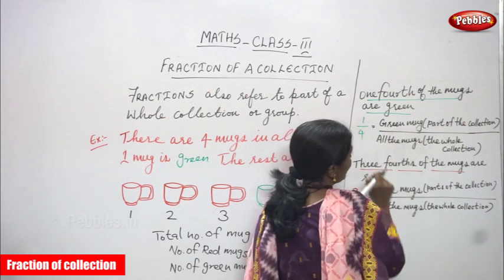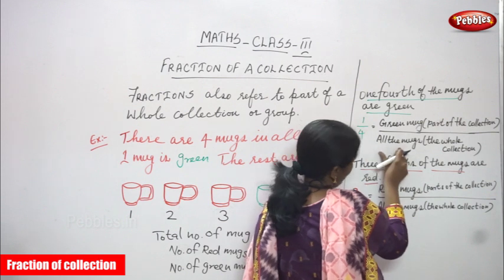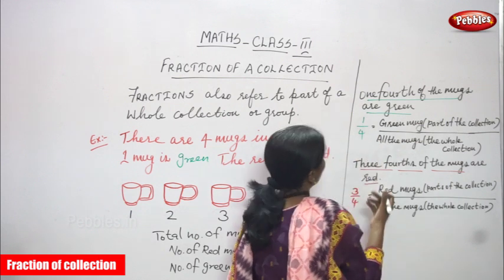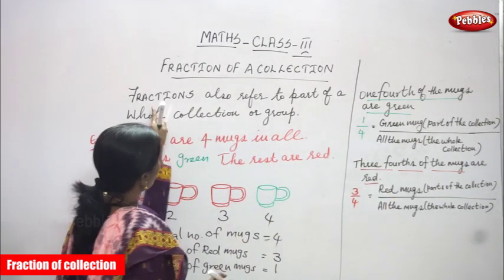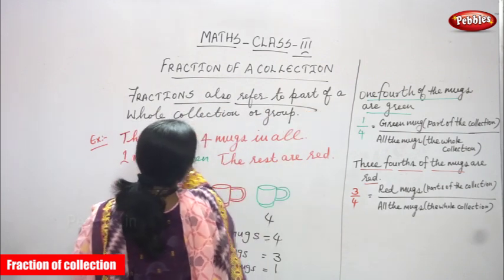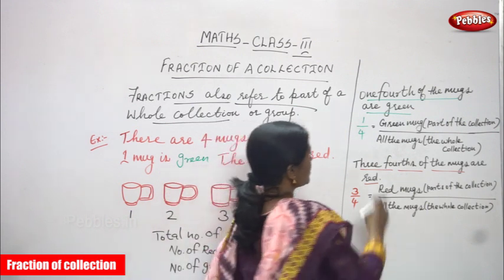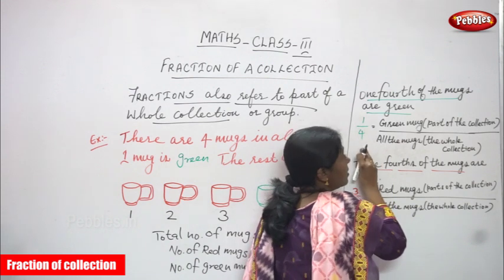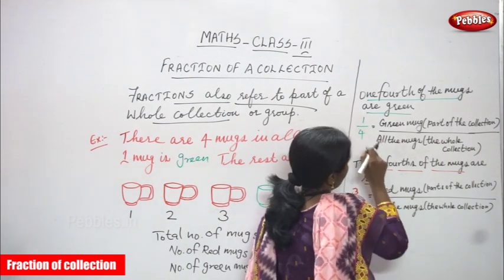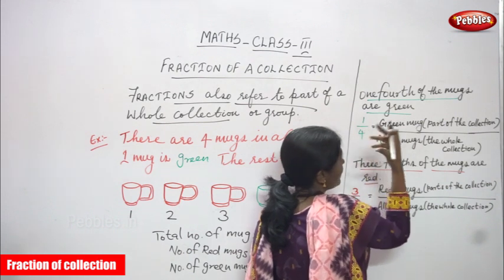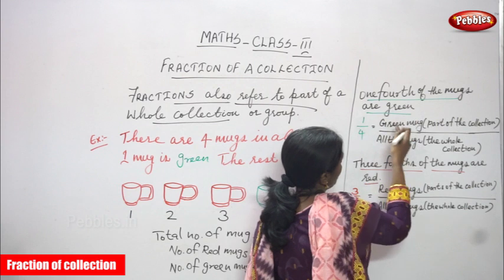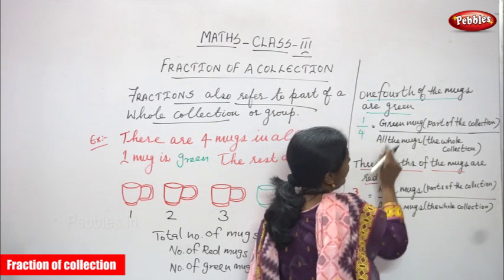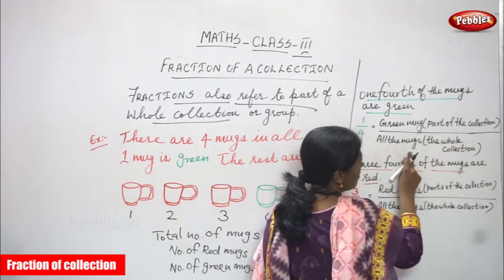One is the green mug — that is the numerator. All the mugs — four mugs — is the denominator. Part of the collection from the whole collection: fraction means a part of a whole collection. We have taken only one part from the whole collection. One-fourth — while you say it in name it is one-fourth; while you write in fraction it is one by four.